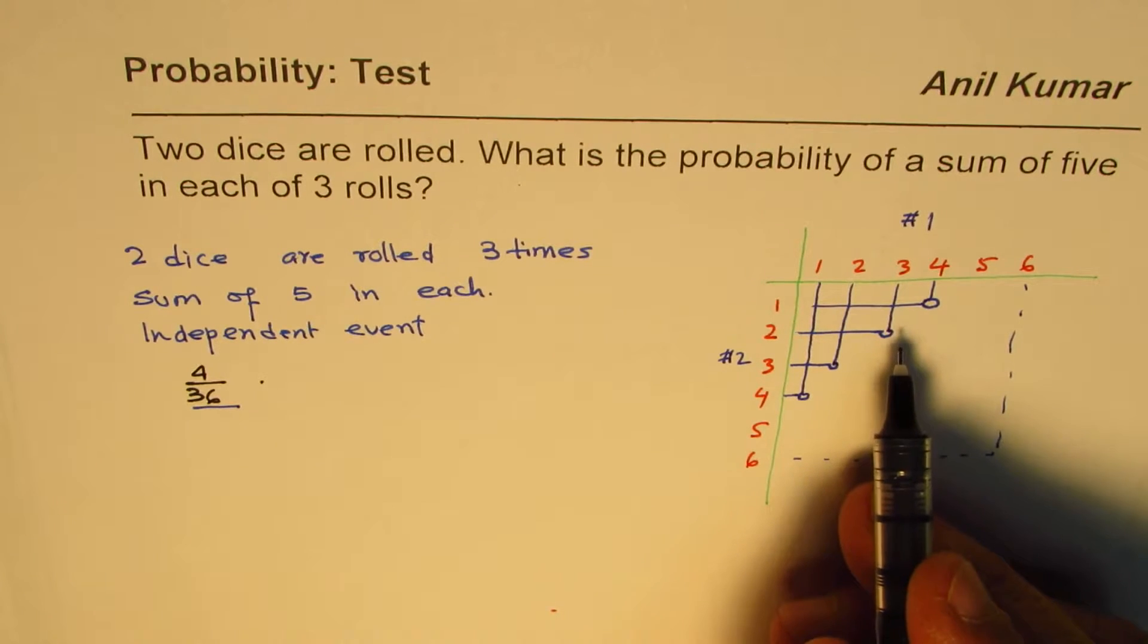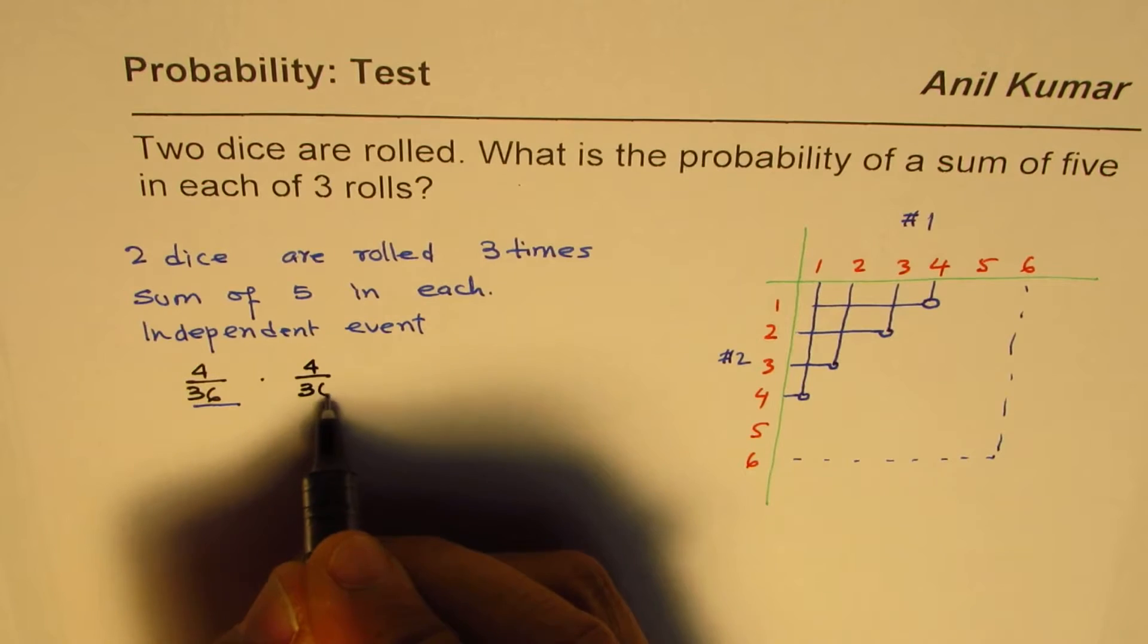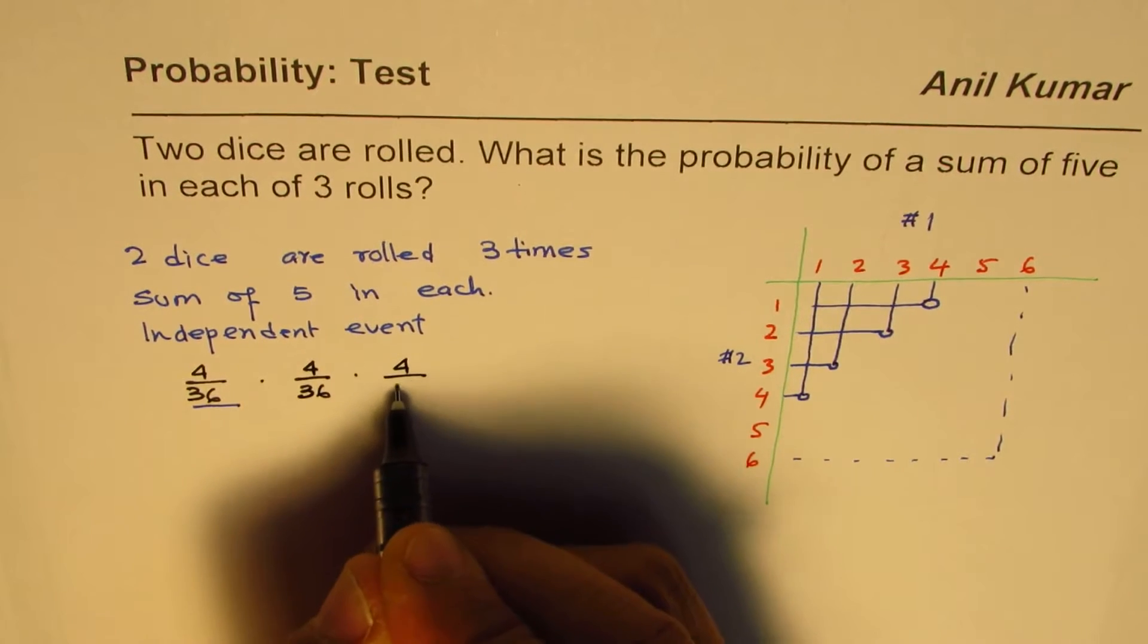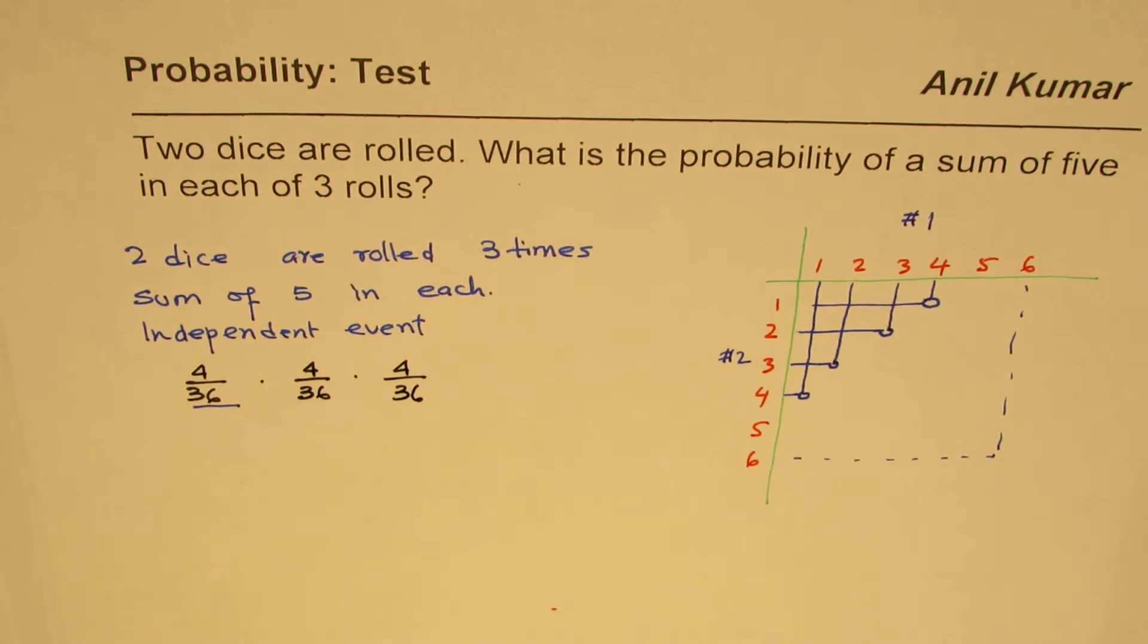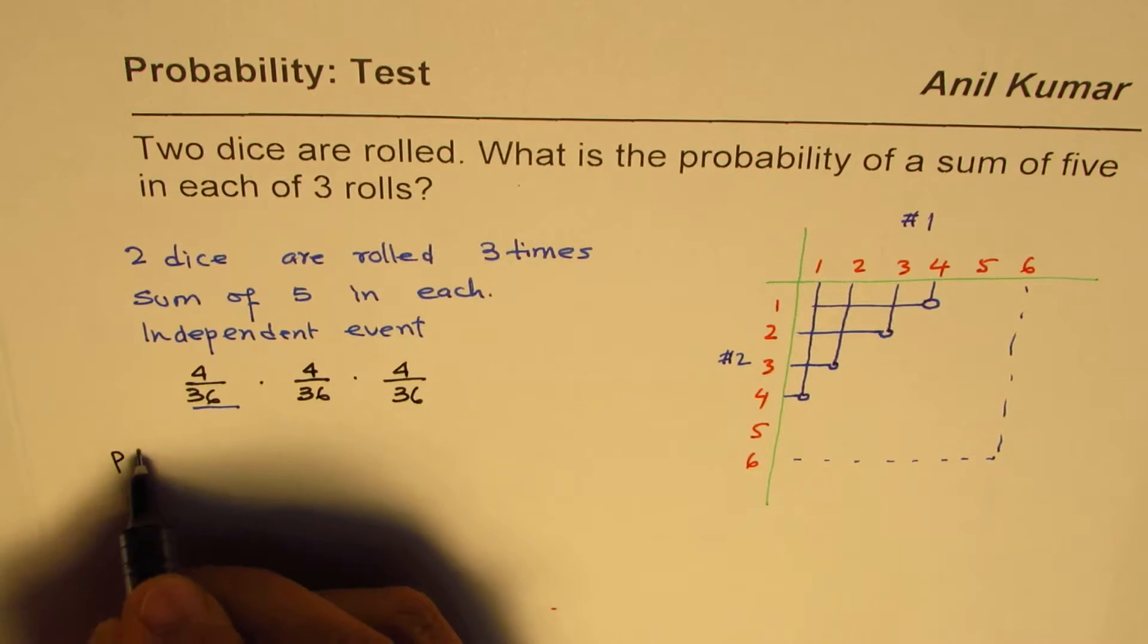Similarly, in the second roll also it is not going to change, it is going to remain the same. So it would be 4 out of 36 times 4 out of 36. So in consecutive rolls, the probability is going to remain the same as this is an independent event.